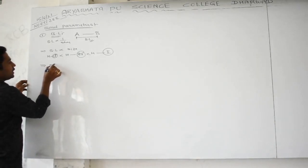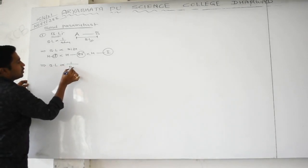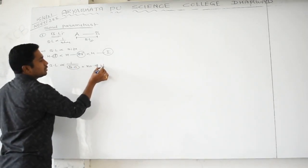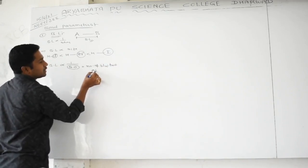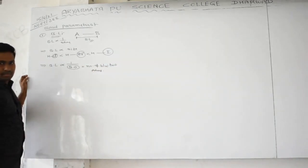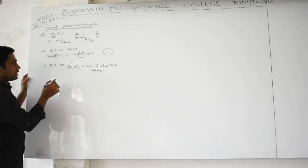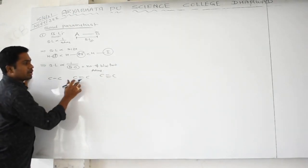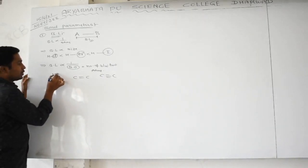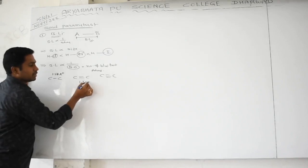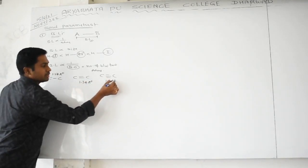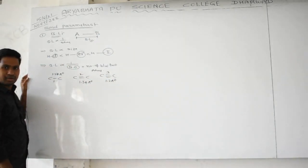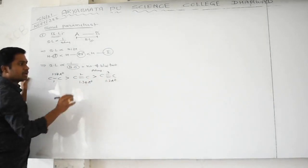Bond length is inversely proportional to bond order. Bond order means the number of bonds between two atoms. More bond order means less bond length. For example, carbon single bond (C–C) has bond length 1.54 Å, carbon double bond (C=C) has 1.34 Å, and carbon triple bond (C≡C) has 1.2 Å. Bond order increasing means bond length decreasing.